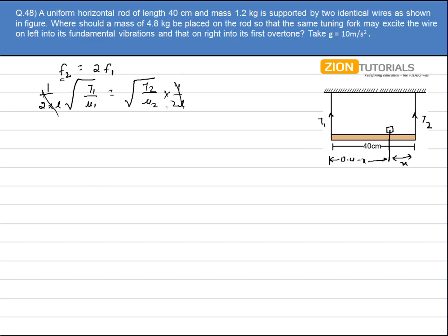Now mu1 and mu2 will also be the same because it is made of the same material. Mass per unit length will be same, so it is also cancelled and it is two times. So squaring them, t1 is equal to 4 times of t2 because I squared it. This is my first equation.